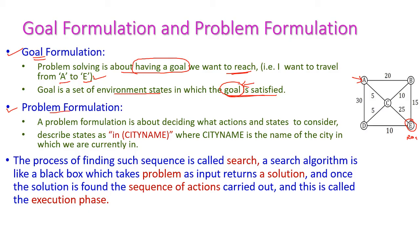Problem formulation is about deciding what actions and states to consider — which action to apply to reach the next state. We describe the state by city name; for example, currently we are in city A. From A we need to go to B, C, D, and finally reach E. The process of finding the search sequence is called search.